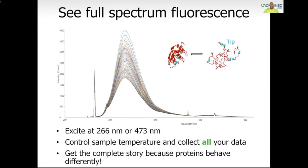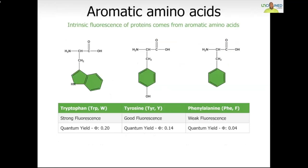What exactly is responsible for intrinsic fluorescence? Proteins are generally made up of 20 essential amino acids. Three of these are aromatic amino acids: tryptophan, tyrosine, and phenylalanine. They get their name from the aromatic rings, which give them the ability to absorb and emit light. Tryptophan has become something of a poster child for protein intrinsic fluorescence because it is the strongest fluorophore of the three — it has a high quantum yield, or high ability to convert absorbed light into emitted light. Tyrosine is also a good fluorophore, while phenylalanine is the weakest.